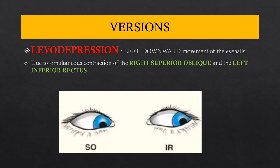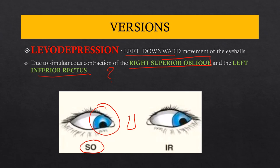Levo depression means left and downward movement of the eyeball. This occurs because of simultaneous contraction of the right superior oblique and the left inferior rectus. In the right eye, the eye adducts then goes downward — the superior oblique causes depression in adduction. In the left eye, the eye abducts then depresses — the inferior rectus causes depression in abduction.